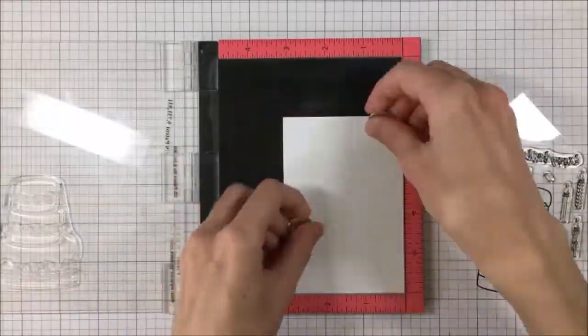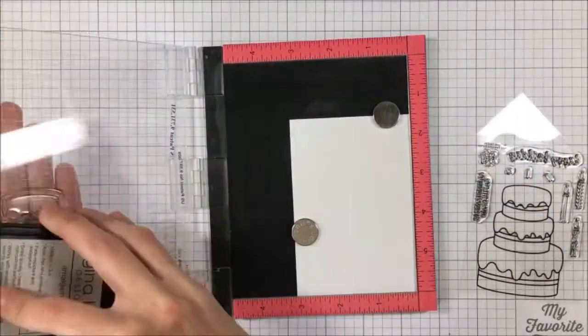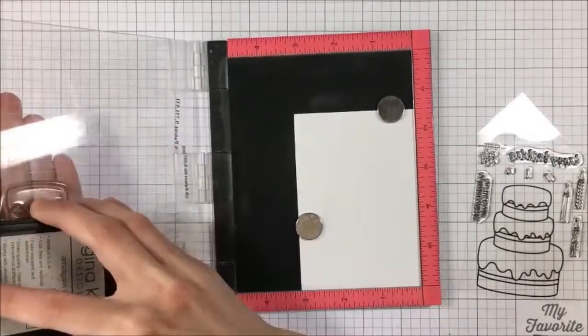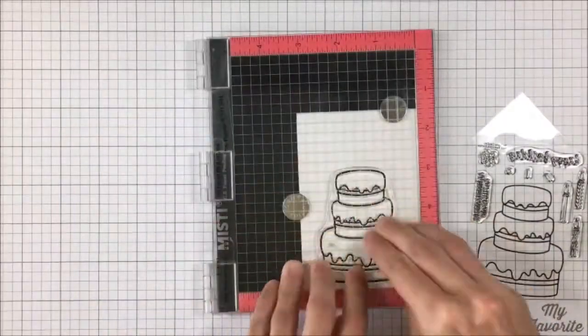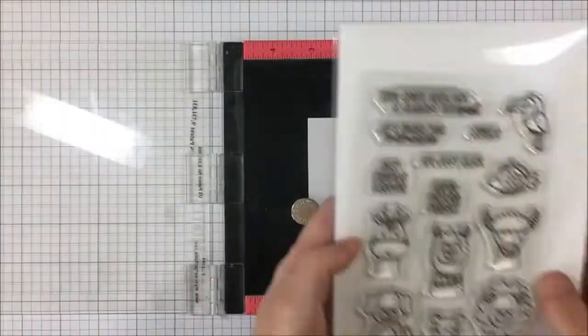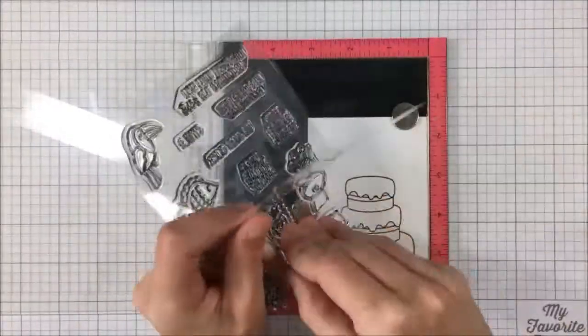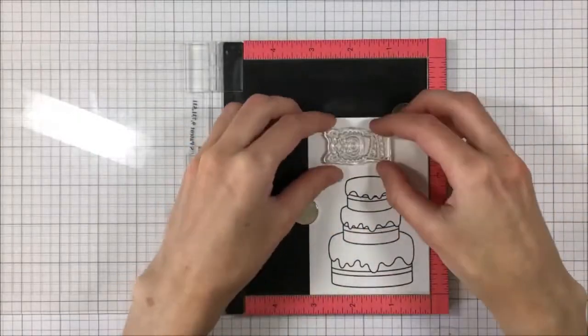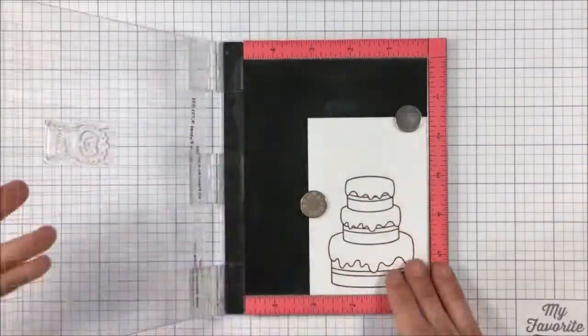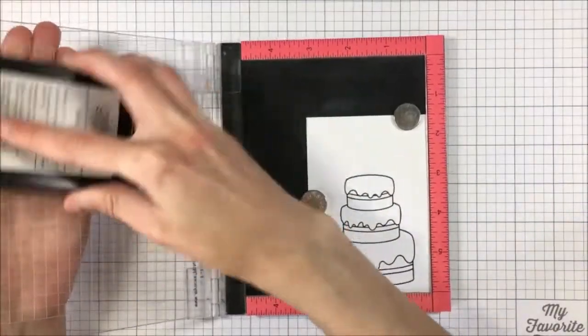I'm going to take the cake from this stamp set and stamp it onto some 110-pound white cardstock. Then I decided I wanted to use that along with some of my Picture Pals stamp set, and I decided to use the llama, so I stamped that down as well after I stamped my cake down.